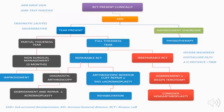This decision algorithm applies when a rotator cuff tear is identified by MRI. For a partial thickness tear, conservative treatment is recommended for three months; if improvement occurs, no surgery is needed; if not, diagnostic arthroscopy, debridement, repair, and acromioplasty are performed. For a full thickness repairable tear, diagnostic arthroscopy and repair with or without acromioplasty followed by rehabilitation are indicated. For an irreparable rotator cuff tear, debridement, biceps tenotomy, and consideration of joint replacement are recommended.